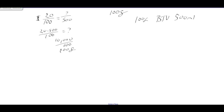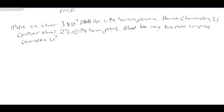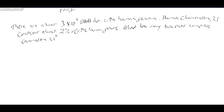Let's carry on to one of the other sample problems on page 233 about percents and the human genome. The question states: there are about 3×10^9 DNA base pairs in the human genome. Human chromosome 21 contains about 2% of the human genome. About how many base pairs comprise chromosome 21?